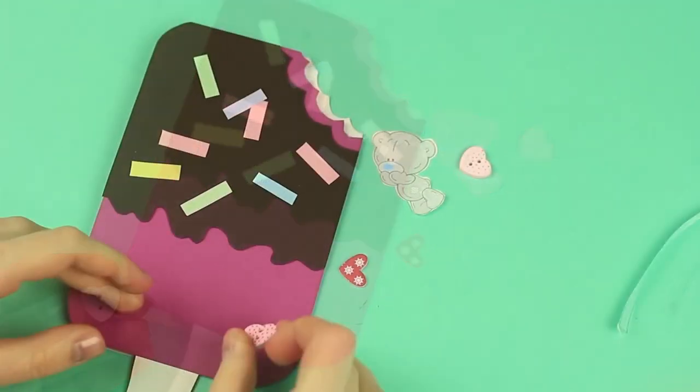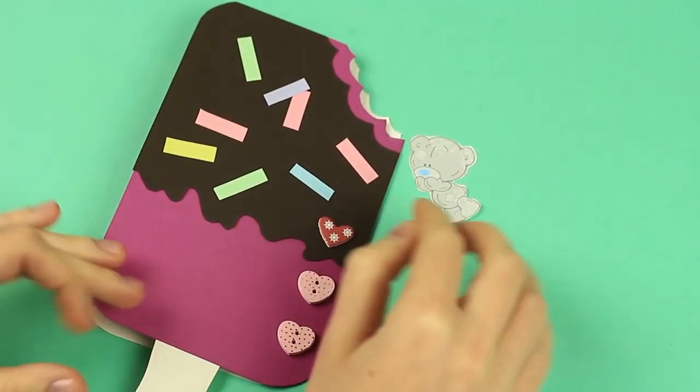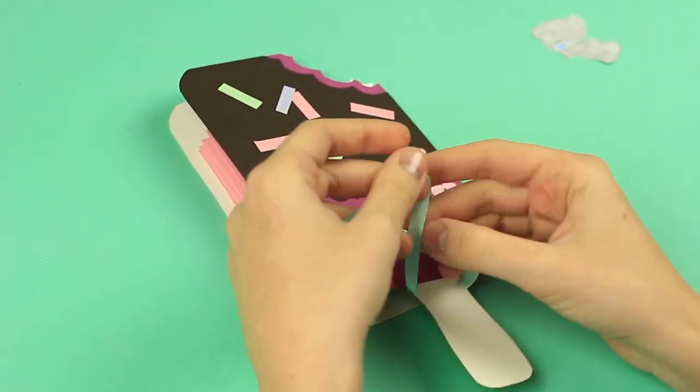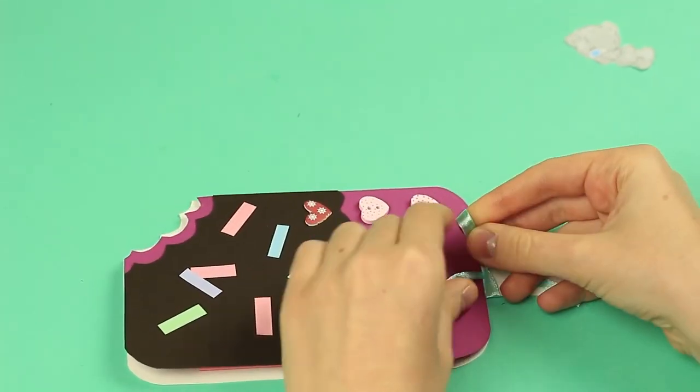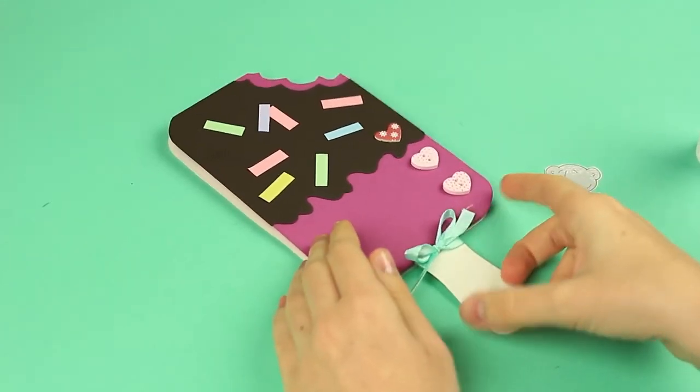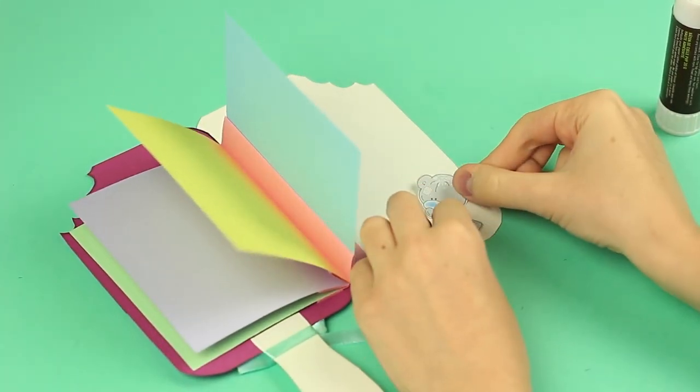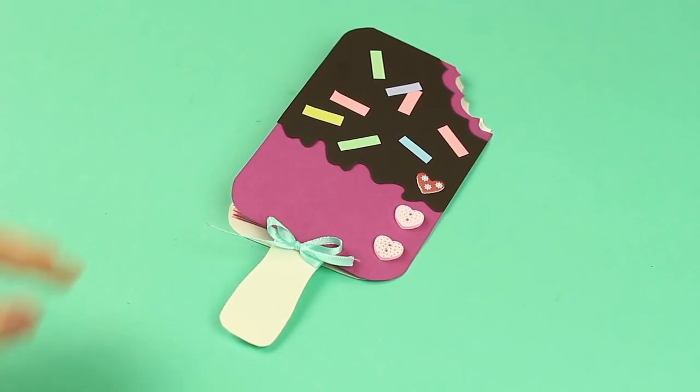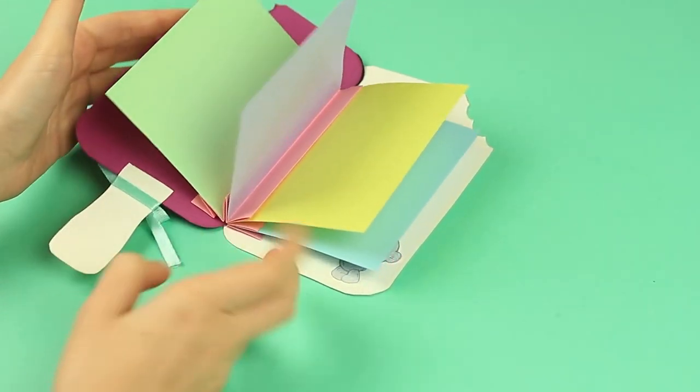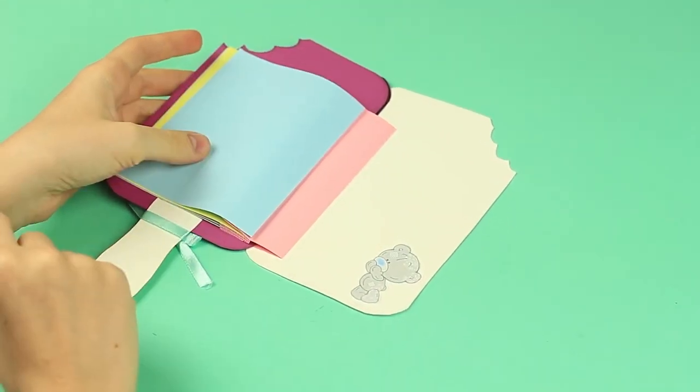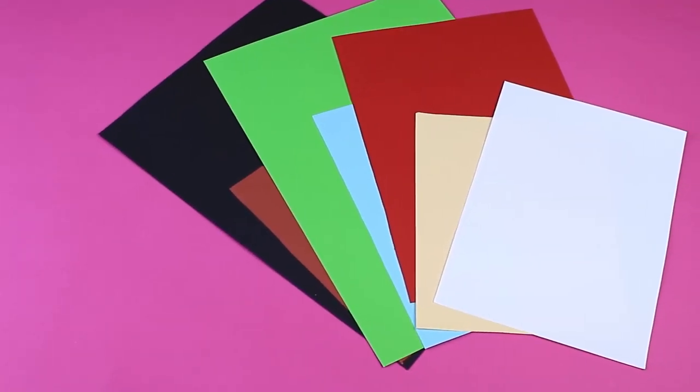Attach acrylic embellishments with multi-purpose glue. Tie a bow around the stick and add some details inside. Done! The ice cream stick shaped scrap card will keep your best summer memories for a long time.